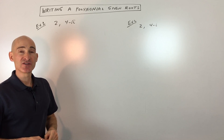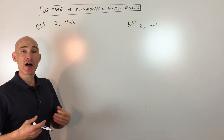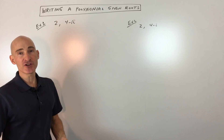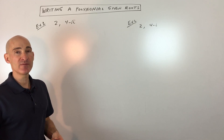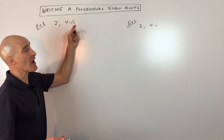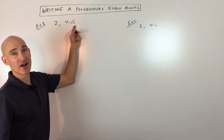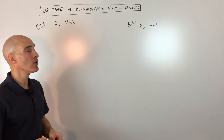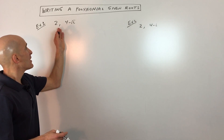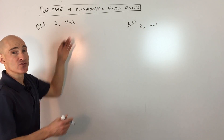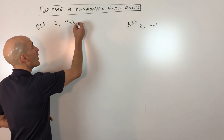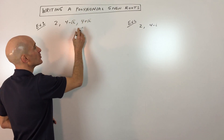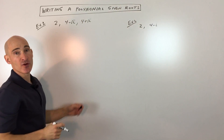Usually what they'll say in a problem like this is that the polynomial has rational coefficients. What they mean by that is you're not going to have any irrational coefficients, meaning square roots that can't be simplified. So if the roots are 2 and 4 minus root 2, you automatically know that 4 plus square root of 2 is also going to be a root.